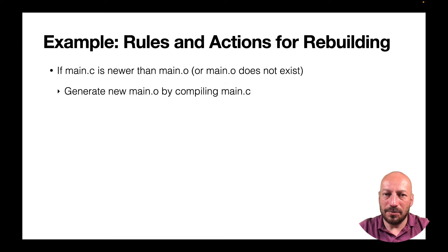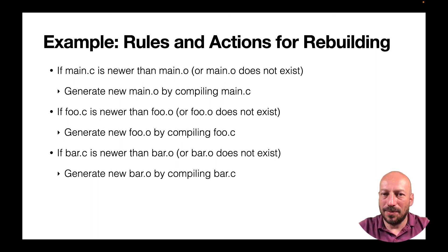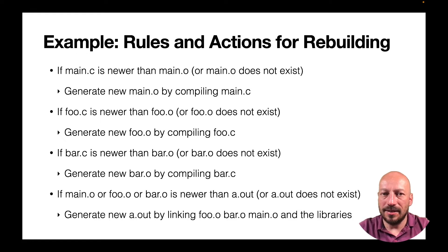Similar rules apply for every source file, for example bar.c and main.c. For the linker, we have a rule for when to link together the object files with the standard library: only if the object files have changed. Assuming the standard library doesn't change, the rule is: if one of the object files has changed, link together all the object files with the standard library again into an executable — otherwise not.